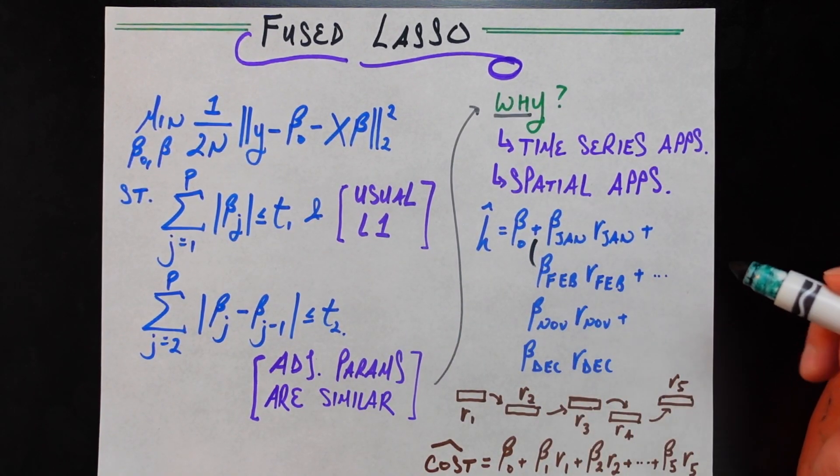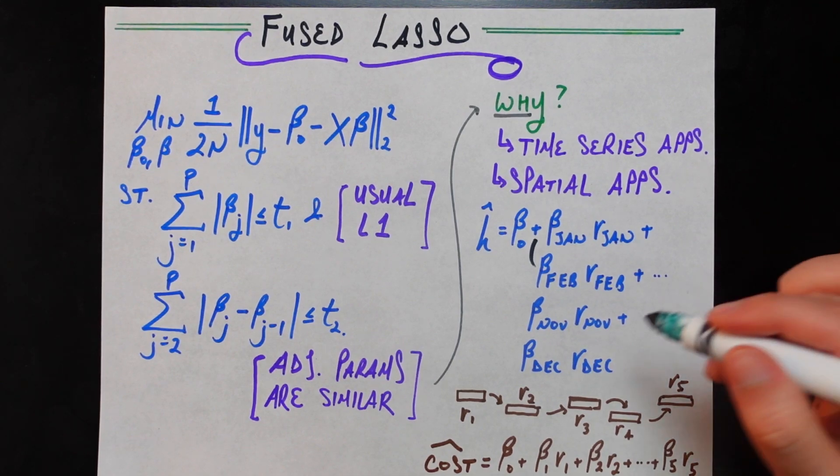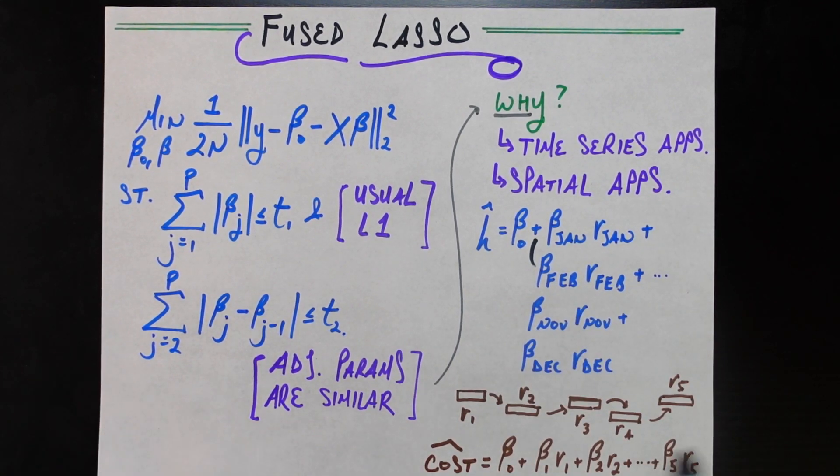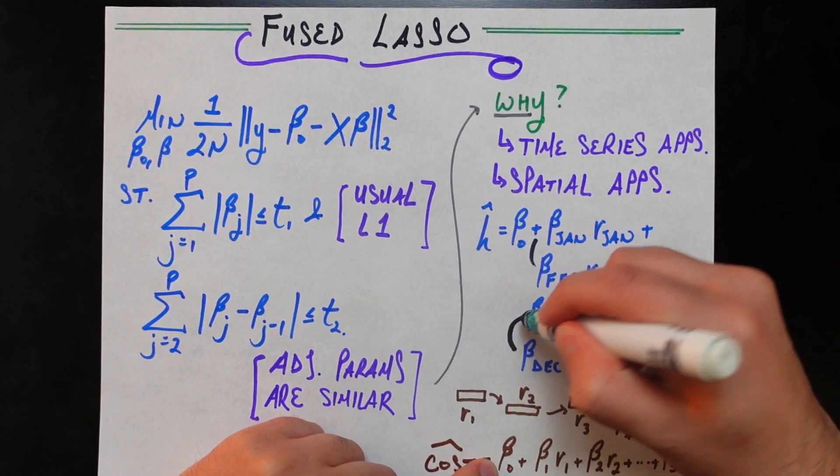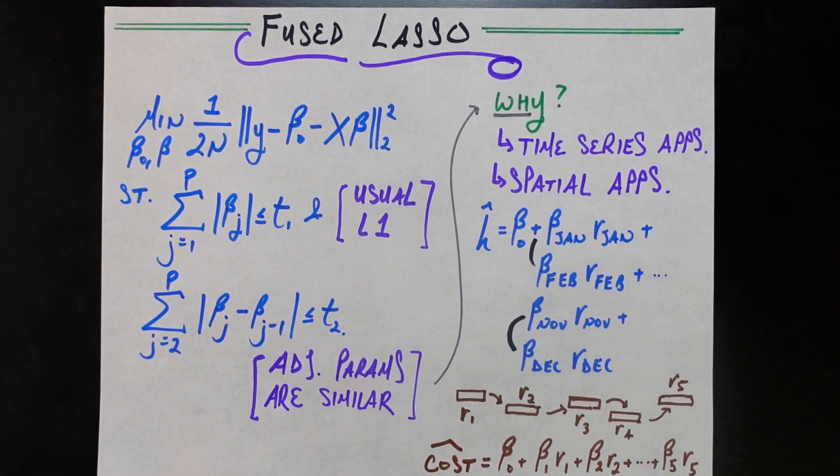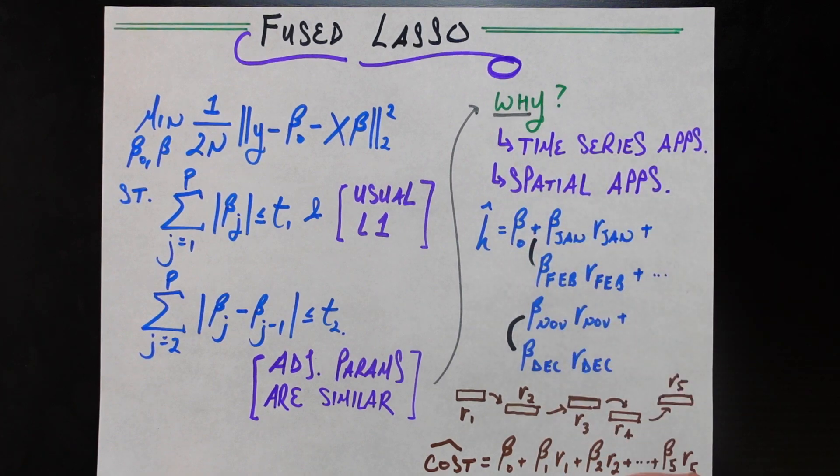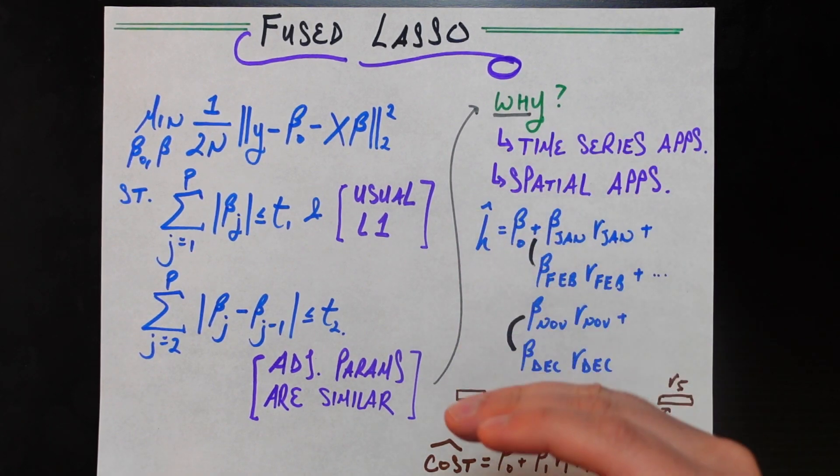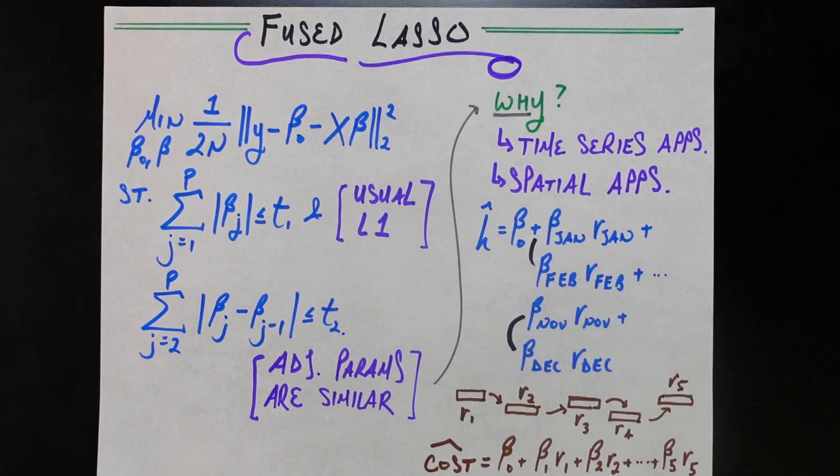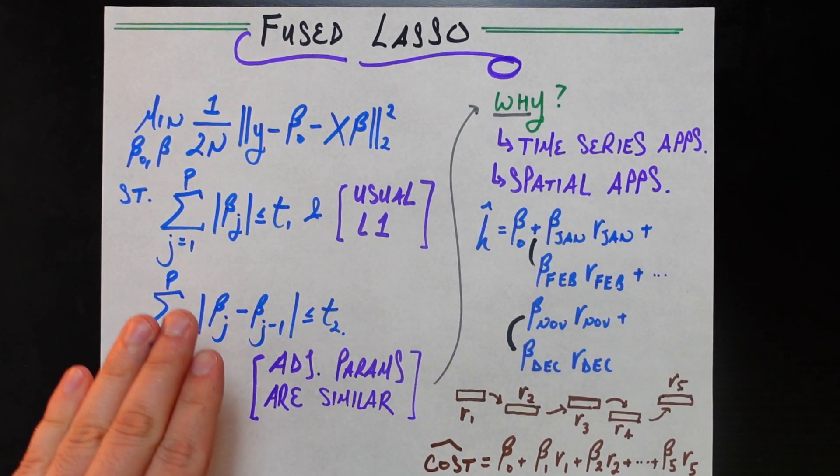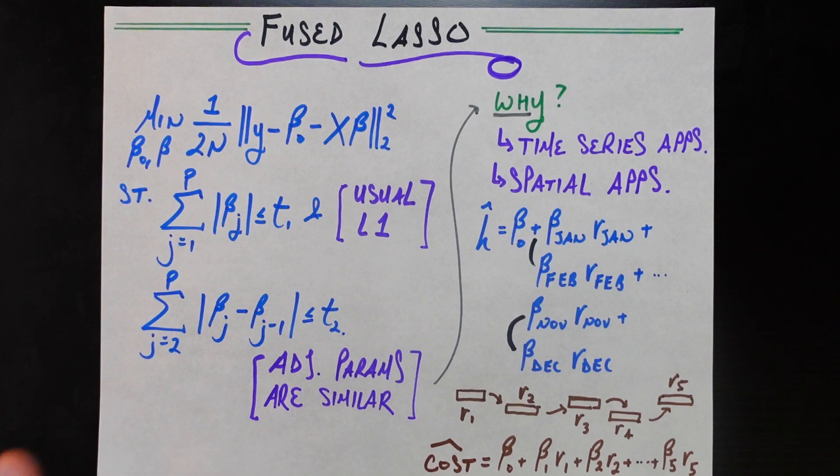Similarly, going through all of the betas, beta November, beta December, the weather in November and December, in terms of rainfall, should be pretty similar. And so, the effects of that rainfall, as measured by these betas, should also be pretty similar to each other. And so, it's exactly in these time series applications, where adjacent betas do make sense in terms of time, should be related in terms of time, exactly where this fused lasso, this additional fused lasso penalty, is very important and makes a lot of intuitive sense.